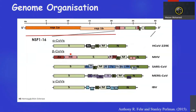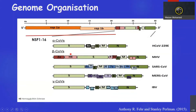In terms of genome organization, the virus has replicase 1A and replicase 1B, which contain about 16 non-structural proteins. These are followed by spike protein, envelope protein, membrane protein, and nucleocapsid protein. Some beta coronaviruses, like murine hepatitis virus, have extra proteins — the HE protein, which is hemagglutinin esterase protein.